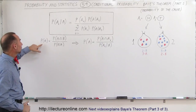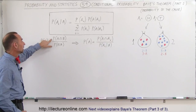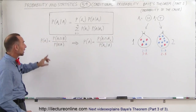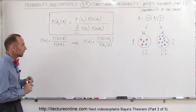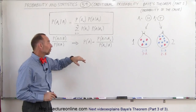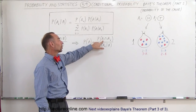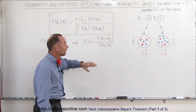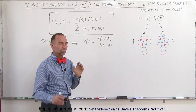The first theorem was this: that the probability that A will occur is equal to the probability that A intersect B will occur, divided by the probability that B will occur, provided that A has already occurred. We can also write it in a more general form, where the probability of A is equal to the probability that A will occur intersected with A sub i, divided by the probability that A sub i will occur provided that A has occurred.